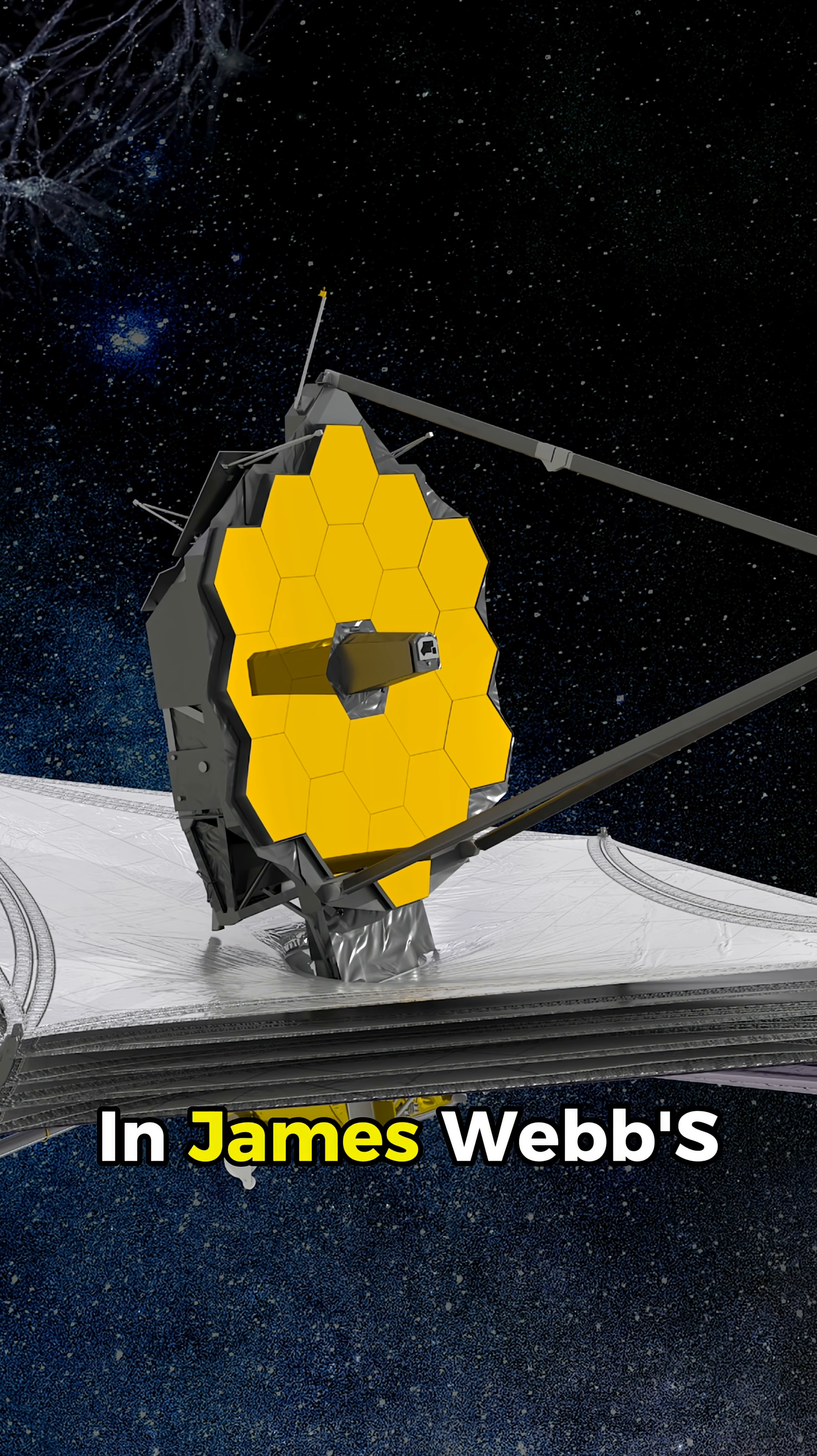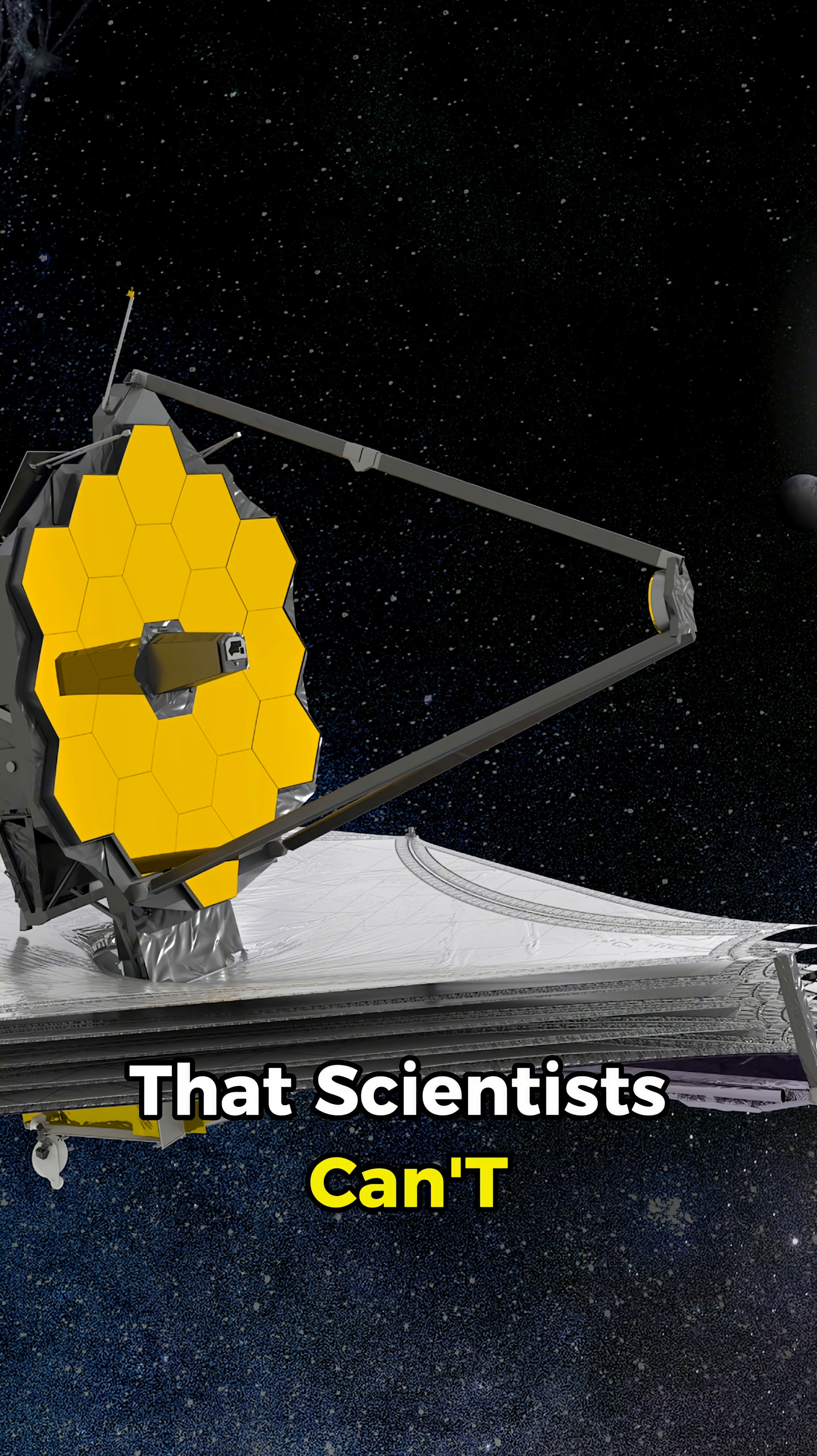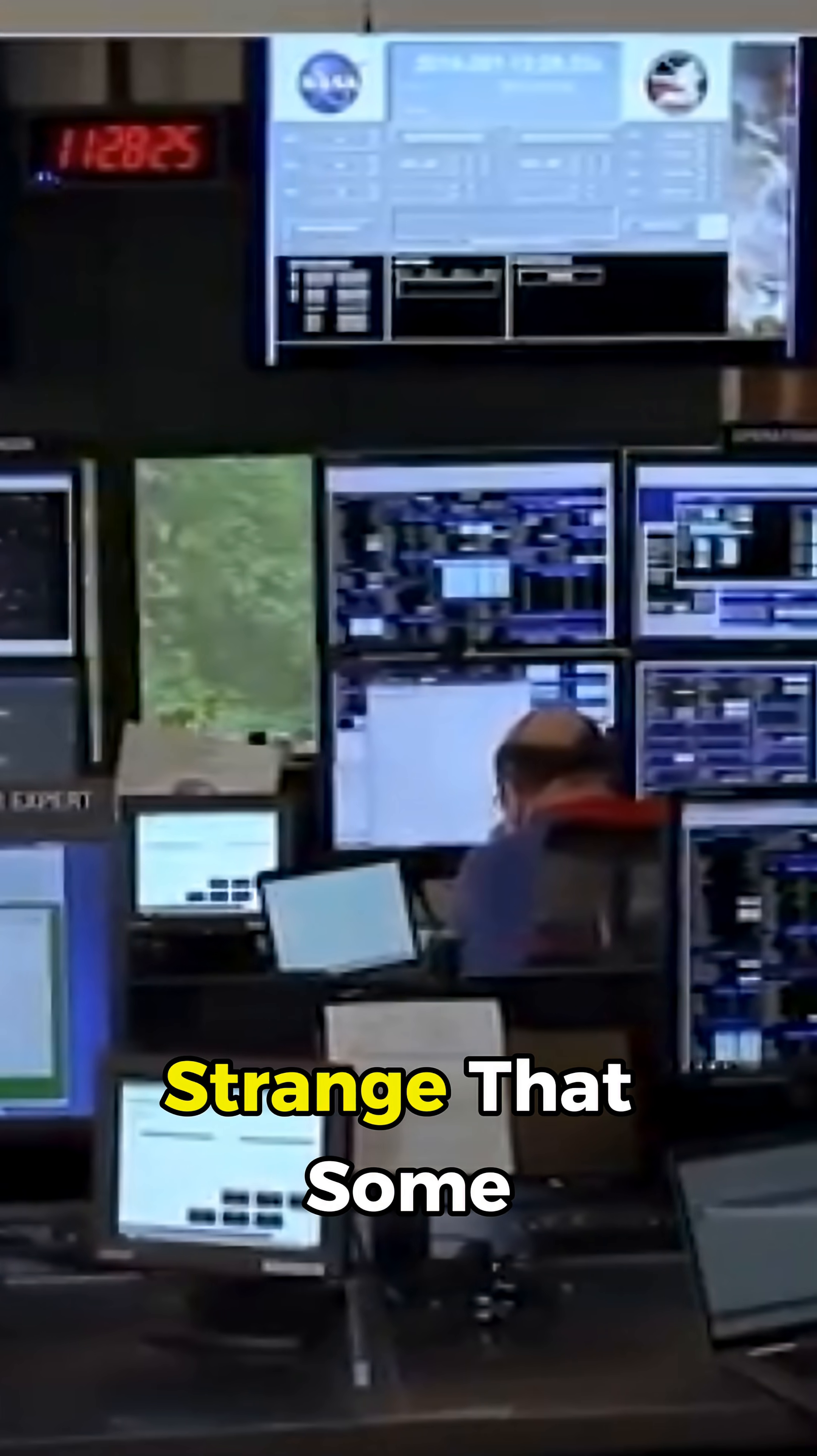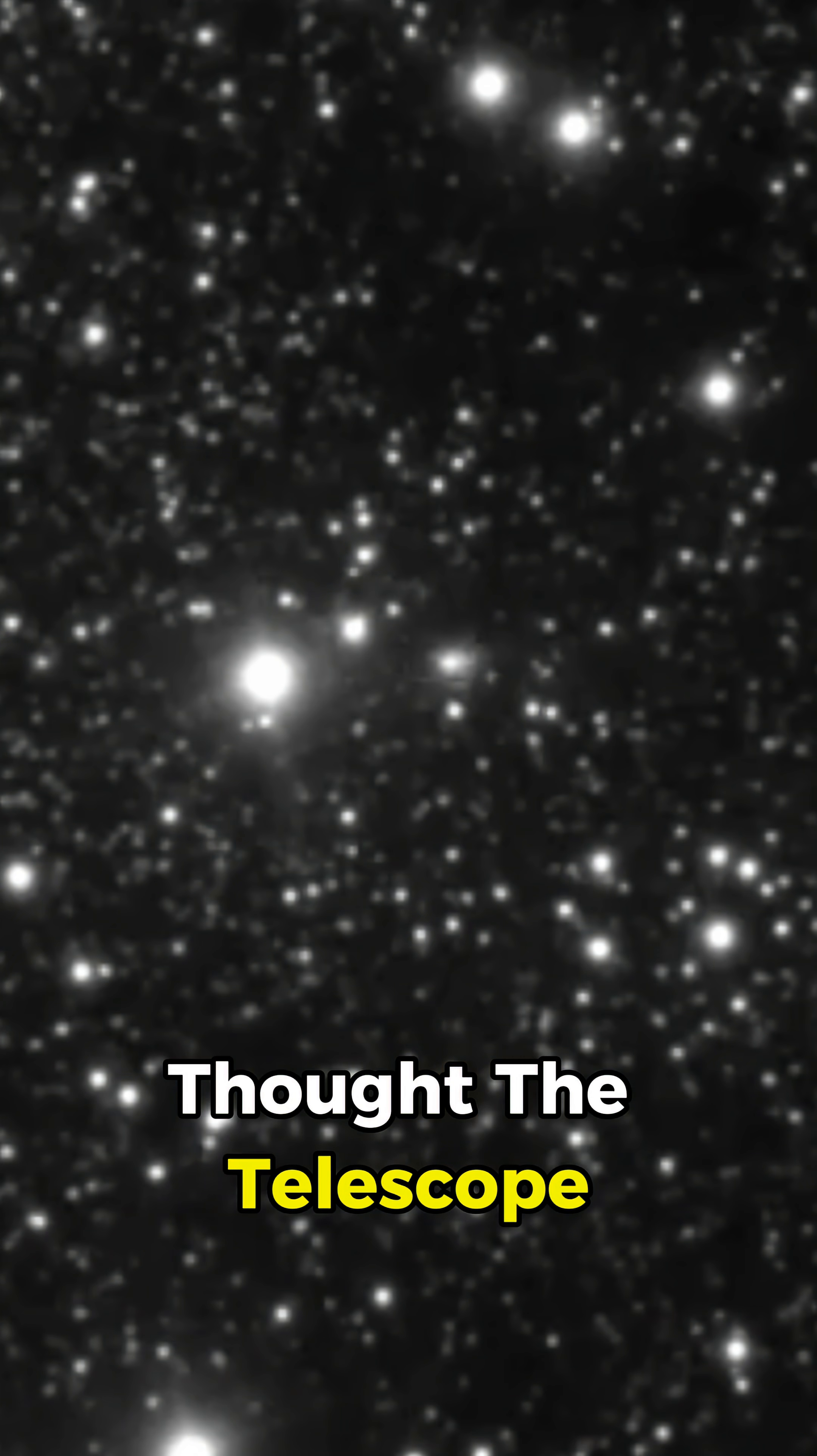Something has appeared in James Webb's images that scientists can't fully explain, and it's so strange that some researchers thought the telescope was malfunctioning, but it wasn't.